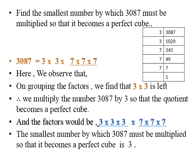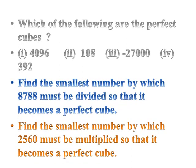This is how to solve questions asking by which smallest number a given number should be multiplied. For division-type questions, we apply the same logic. Now it's time for an assignment: find the prime factors of the given numbers and check whether they are perfect cubes or not. The colored questions ask you to find the number by which to multiply or divide to obtain a perfect cube. Apply this understanding to solve the assignment. Thank you.